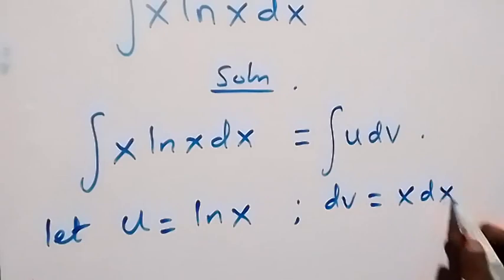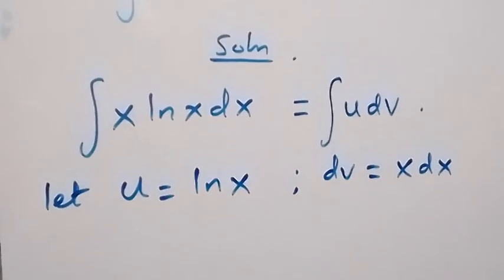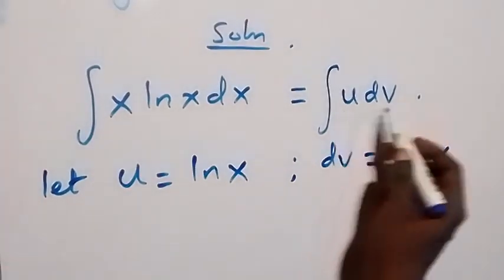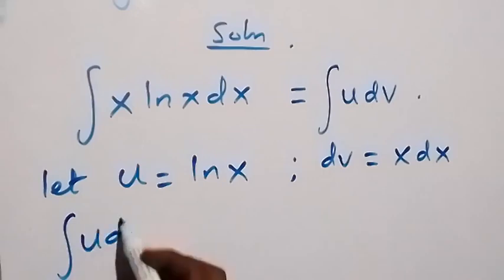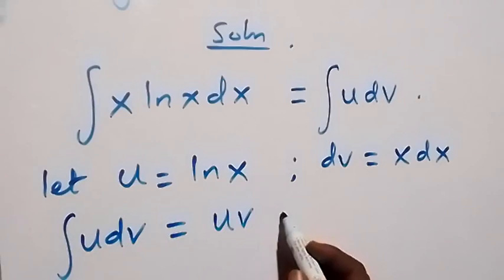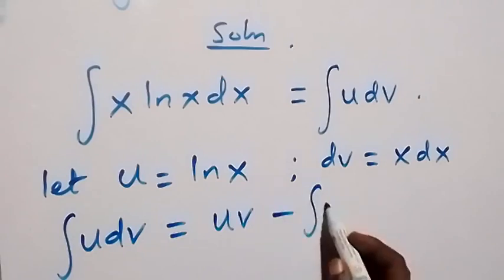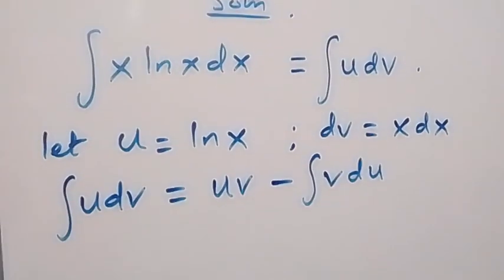Now here we can use the formula from what we have. When we have integral u dv from integration by parts. So integral u dv here gives us uv then minus integral v du.